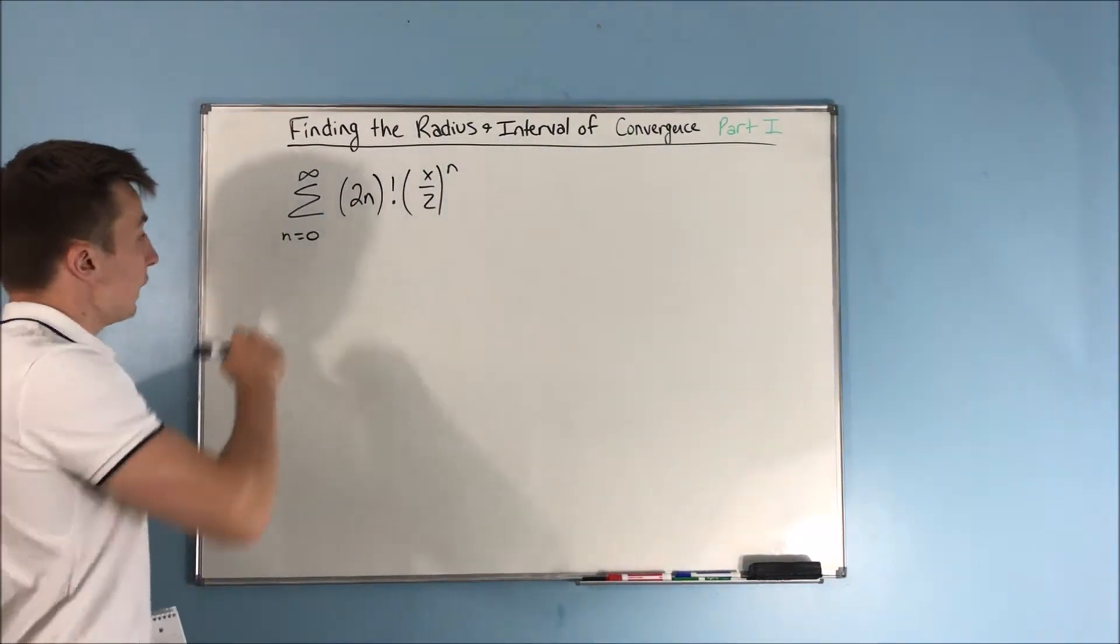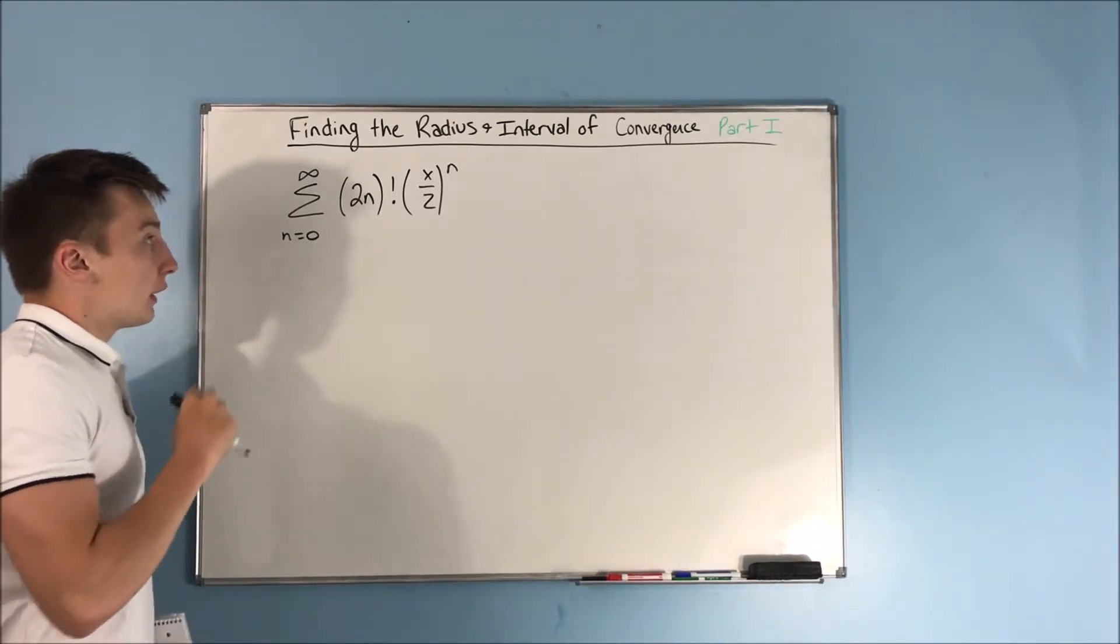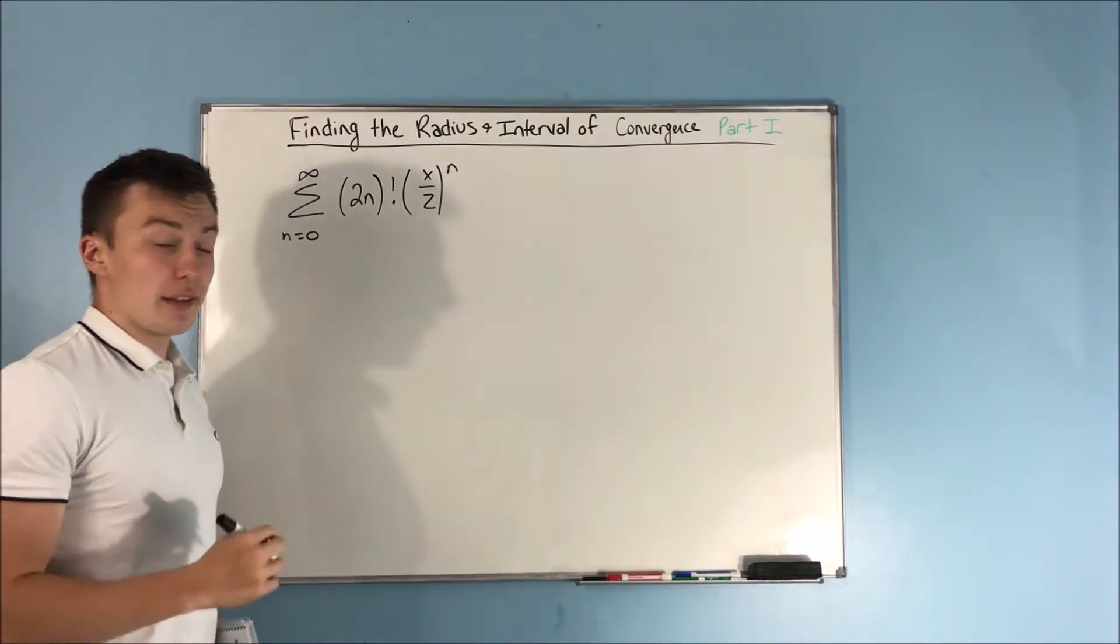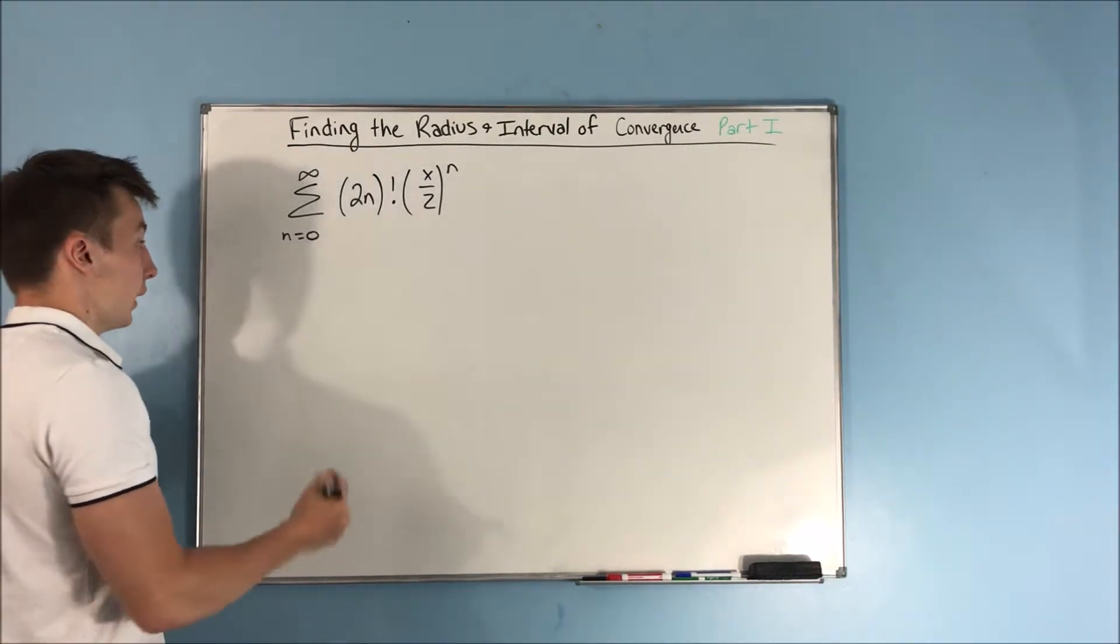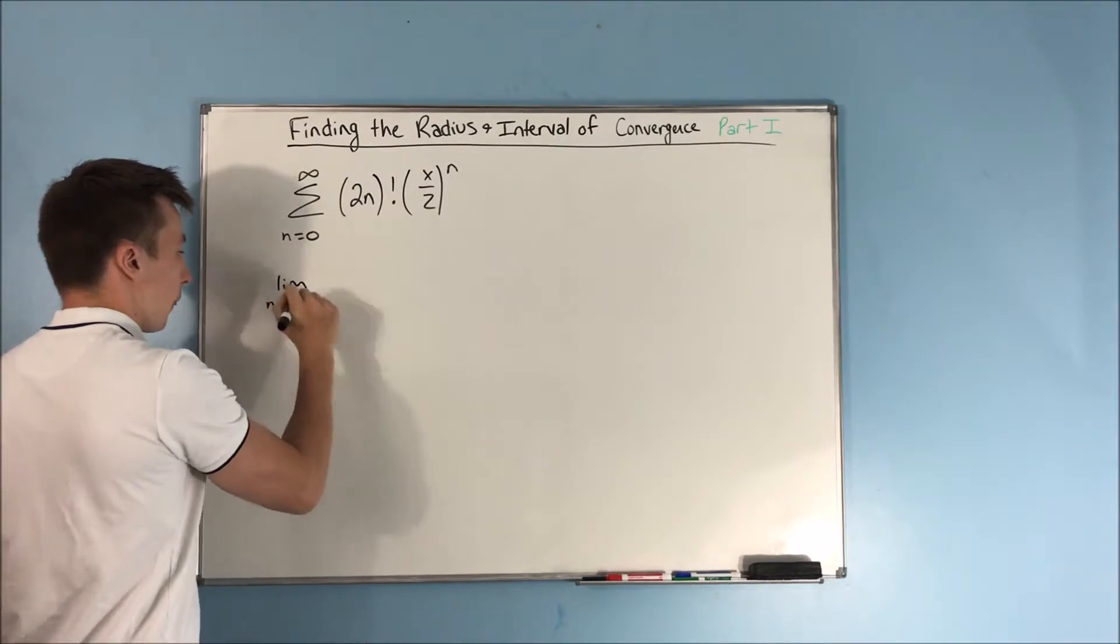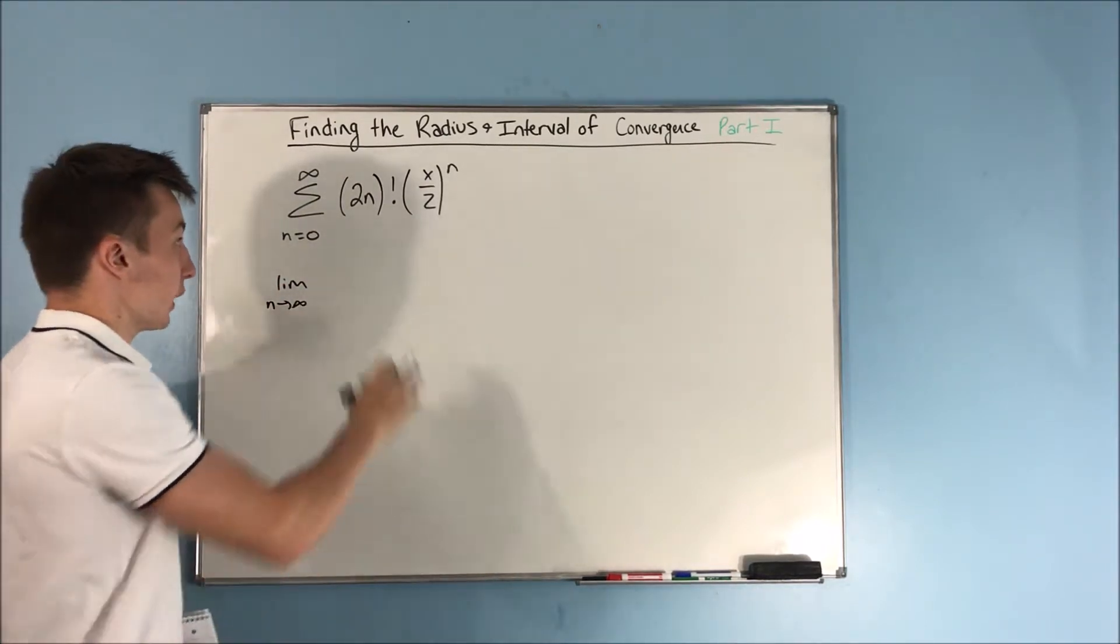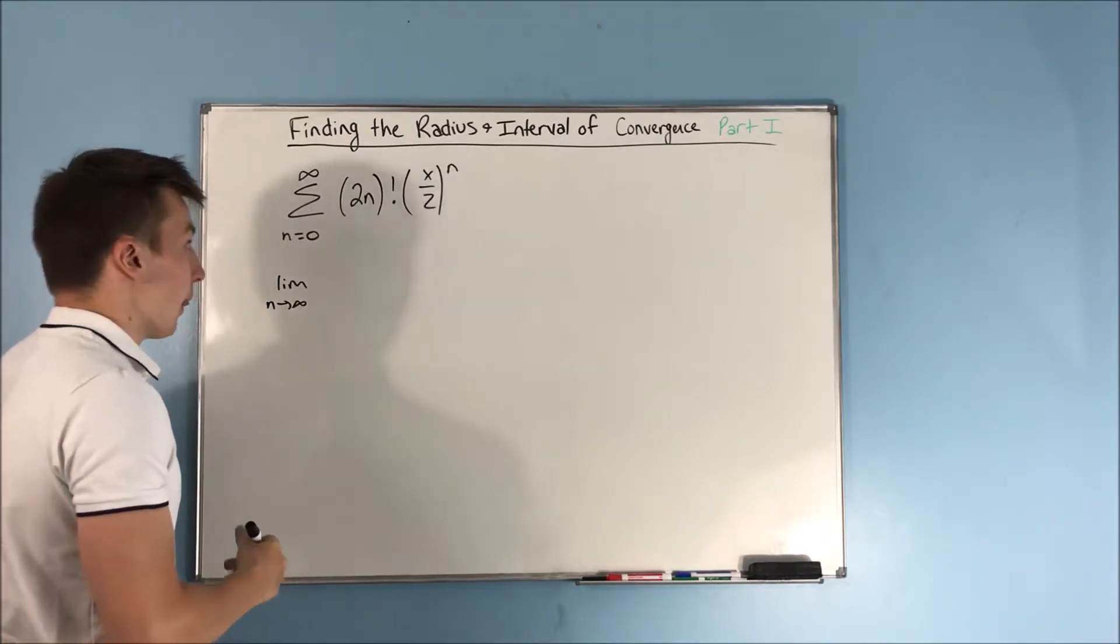Next, we have the sum from n equals 0 to infinity of 2n in parentheses factorial times x over 2 raised to the n. So we got to do our ratio test here, another ratio test. Can't do root test because this piece right here is not raised to the n.